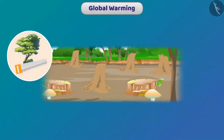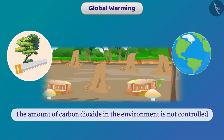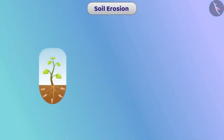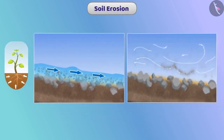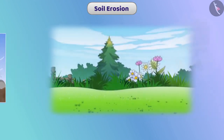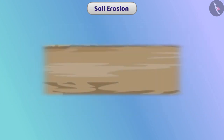Our activities are causing huge loss to forest resources. Due to deforestation, the amount of carbon dioxide in the environment is not controlled, and the temperature of the earth has started to rise — we call this global warming. Trees hold the soil; due to the absence of trees, the fertile layer gets washed away with rainwater and blown away with the wind. This is called soil erosion. Due to excessive cutting of trees, green lands are converted into deserts.